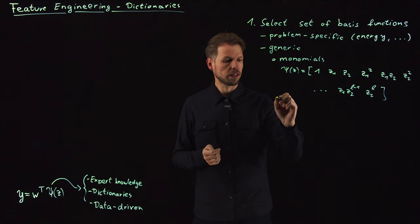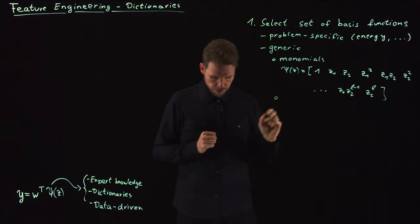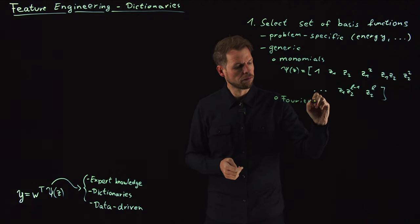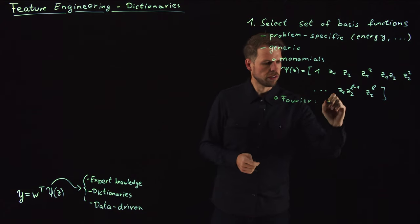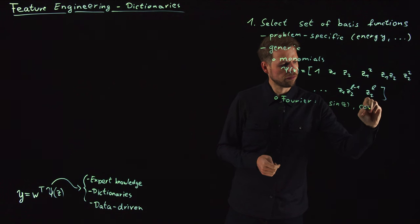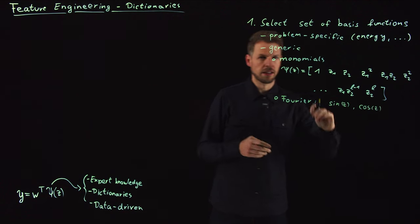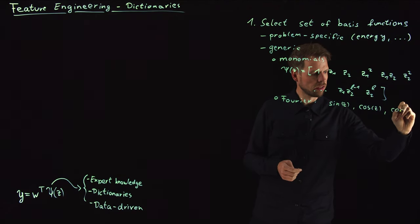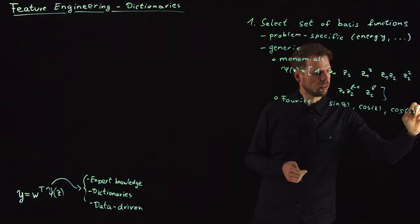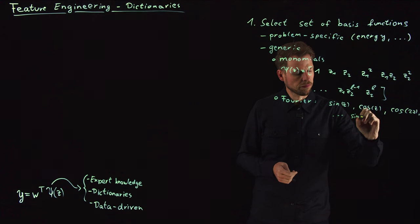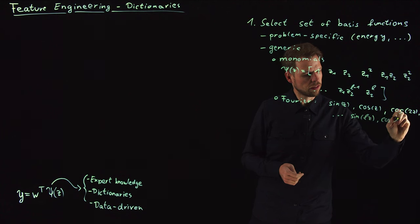What you can also do is you take other generic functions like Fourier modes, for instance. Very popular. So what you have is you take sine of z, cosine z, and then higher harmonics of this. So you take sine and cosine through z, and so on, until you are at the end, sine lz, cosine lz.